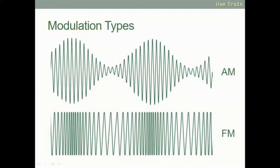The first two modulation types we're going to look at are AM and FM — fairly commonly used in commercial radio. With amplitude modulation, if you draw a line through the middle of the waveform, the amplitude is from the center line to the top of a peak or bottom of a trough, and that amplitude changes with the audio mixed in. Frequency modulation changes the actual frequency you're operating on ever so minutely, but enough to carry information.